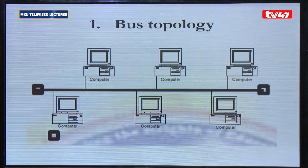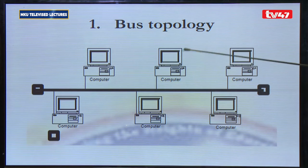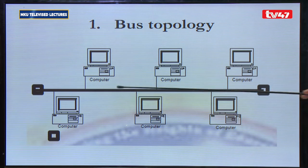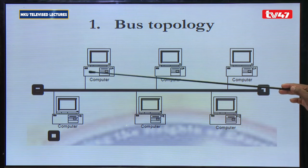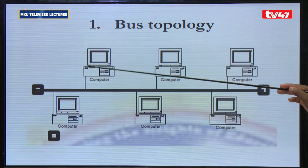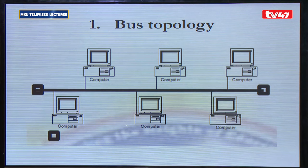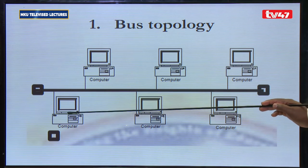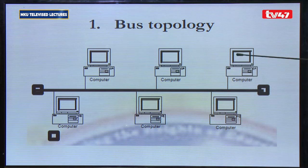Let's assume computer 1 is transmitting data to computer 6, and the bus cable is free — it is not transmitting any data. So computer 1 will place the data on the bus cable. This data has the source address and the destination address. It will move to each computer in turn — computer 4, computer 2, computer 3, computer 5, and computer 6. All the computers will get that data.